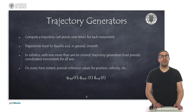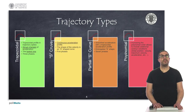Therefore, a trajectory can be defined as a set of points, positions, velocities, and acceleration references over time, as we will see next. But first, let's discuss some of the widely used trajectory types.